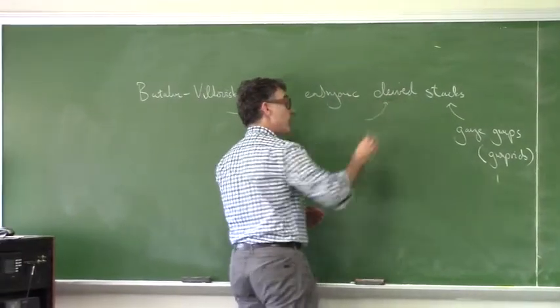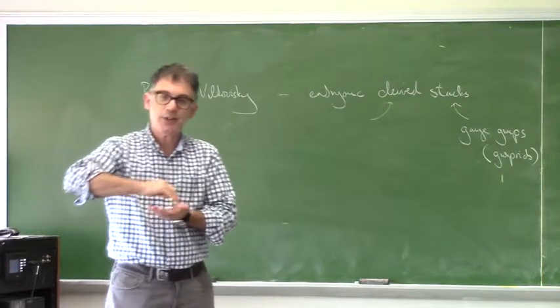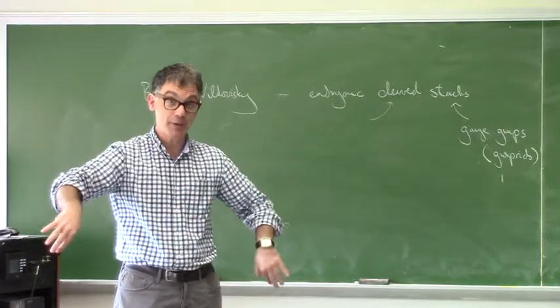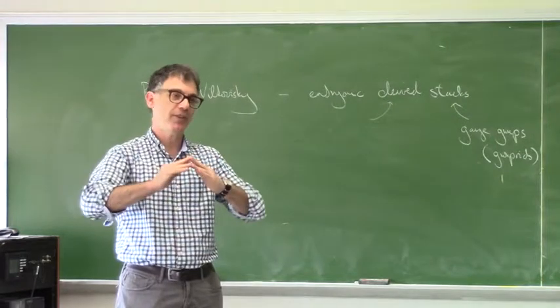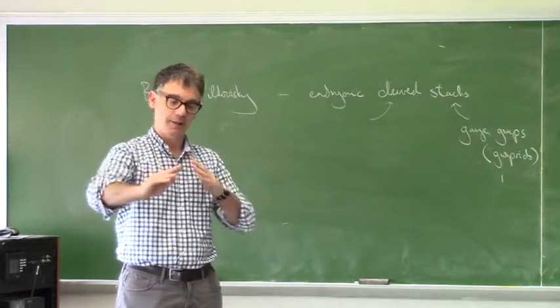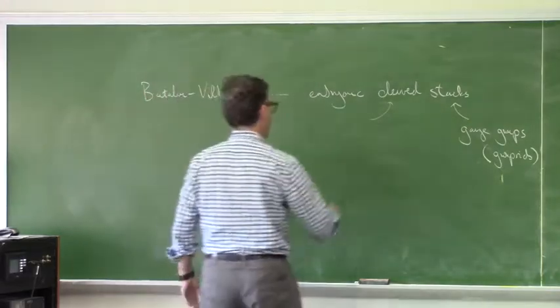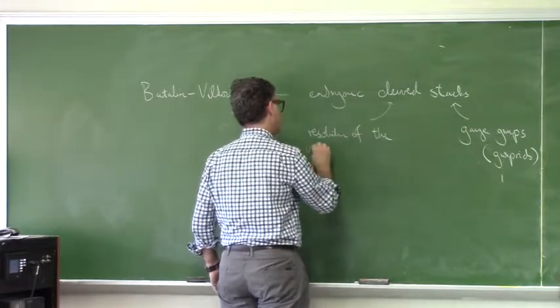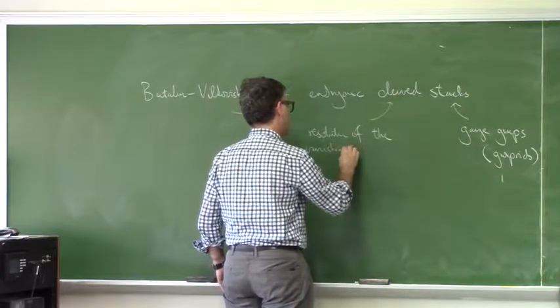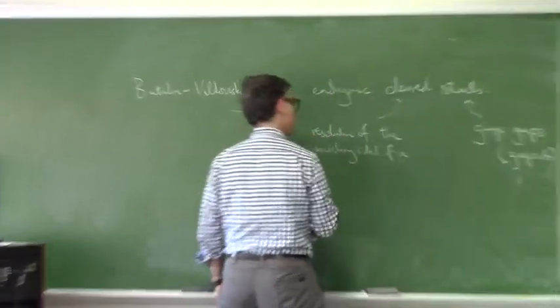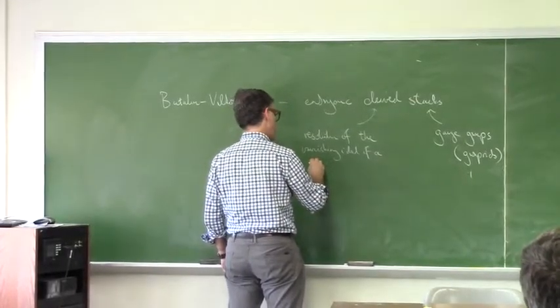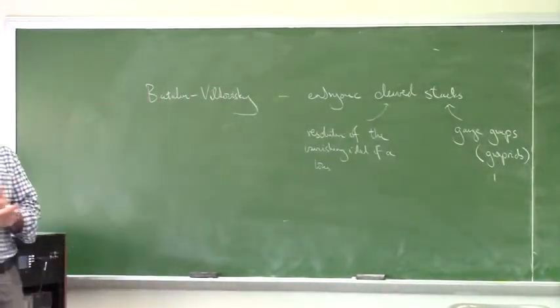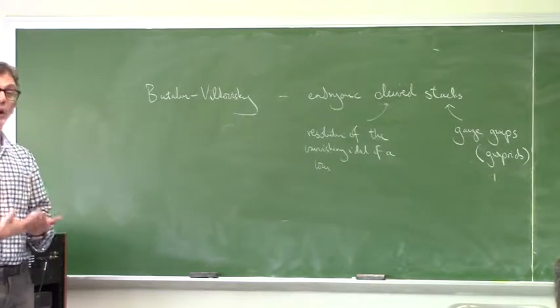The derived part corresponds to the idea that you have a locus inside some manifold, which is of interest, and instead of throwing away the rest of the manifold, you somehow resolve the ideal which cuts the locus out. This is resolution of the vanishing ideal of some locus.